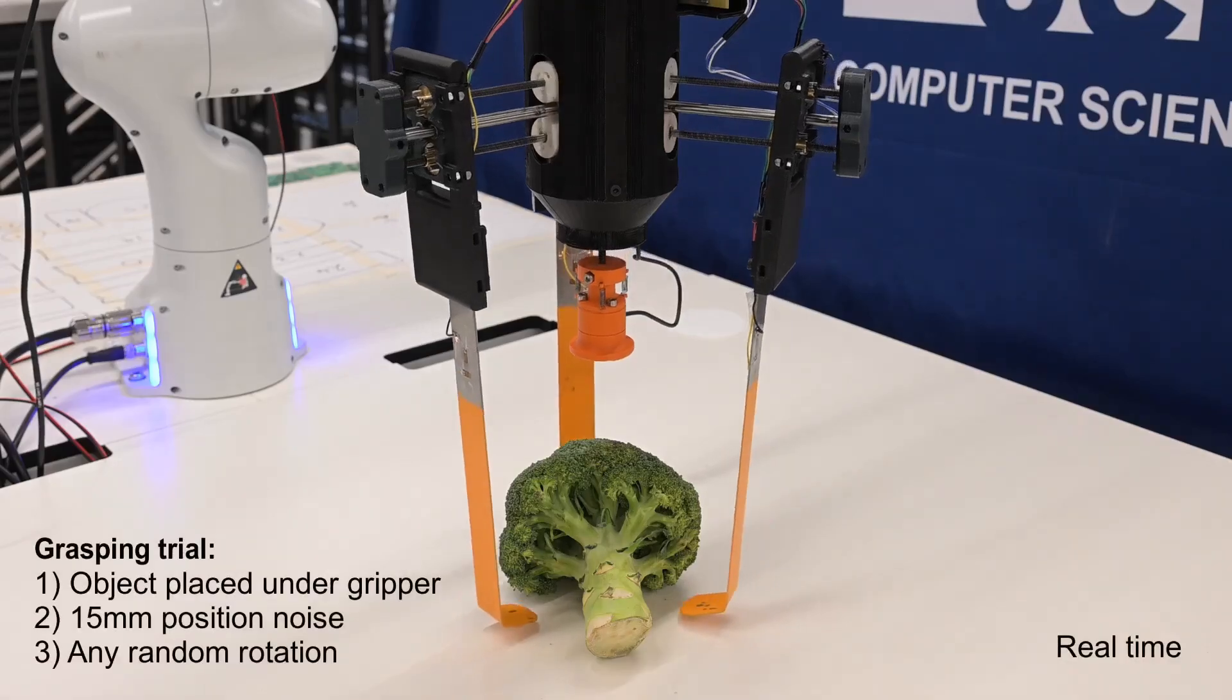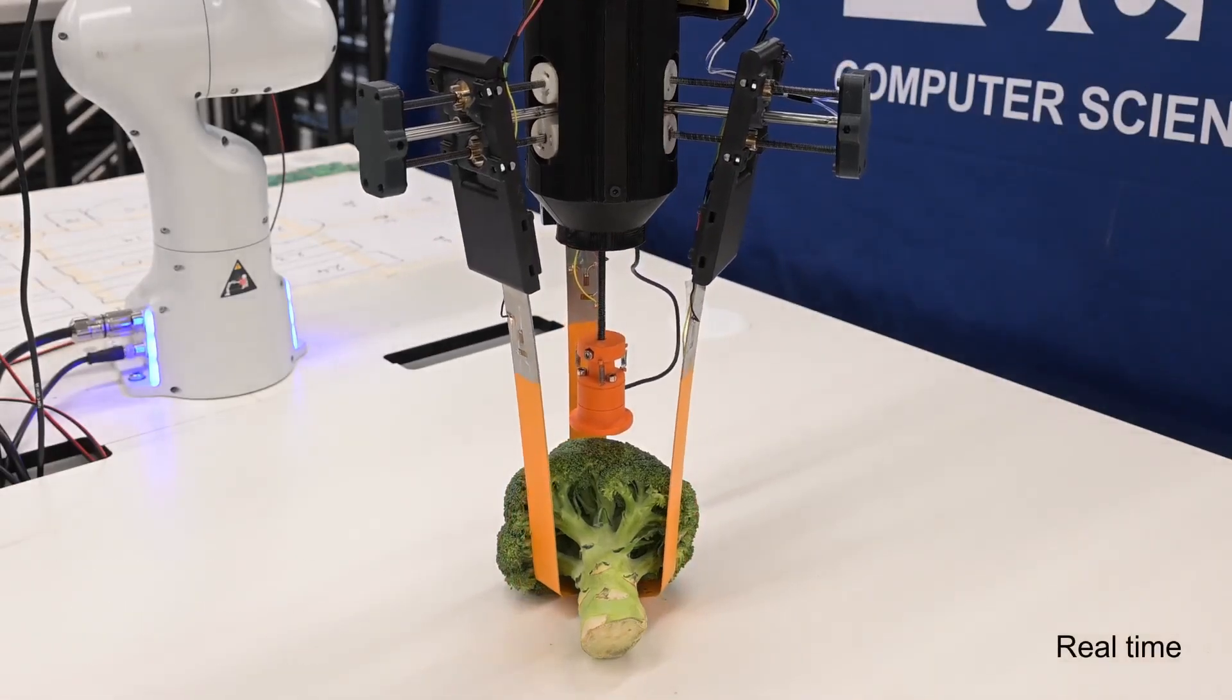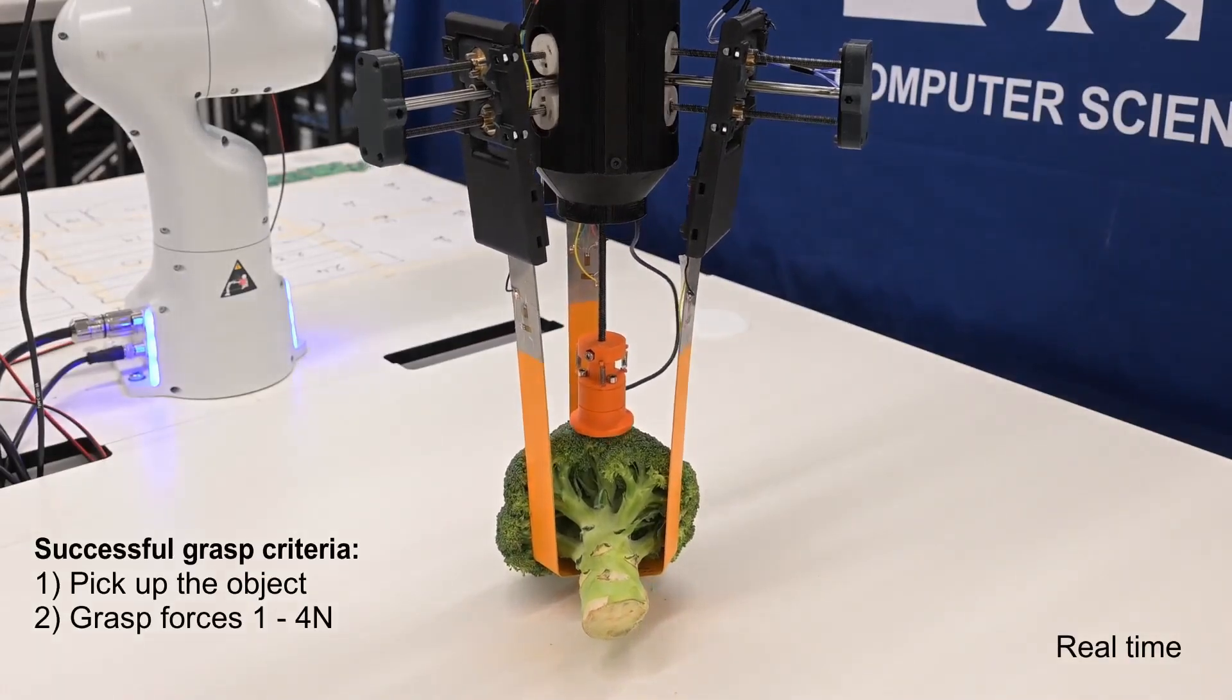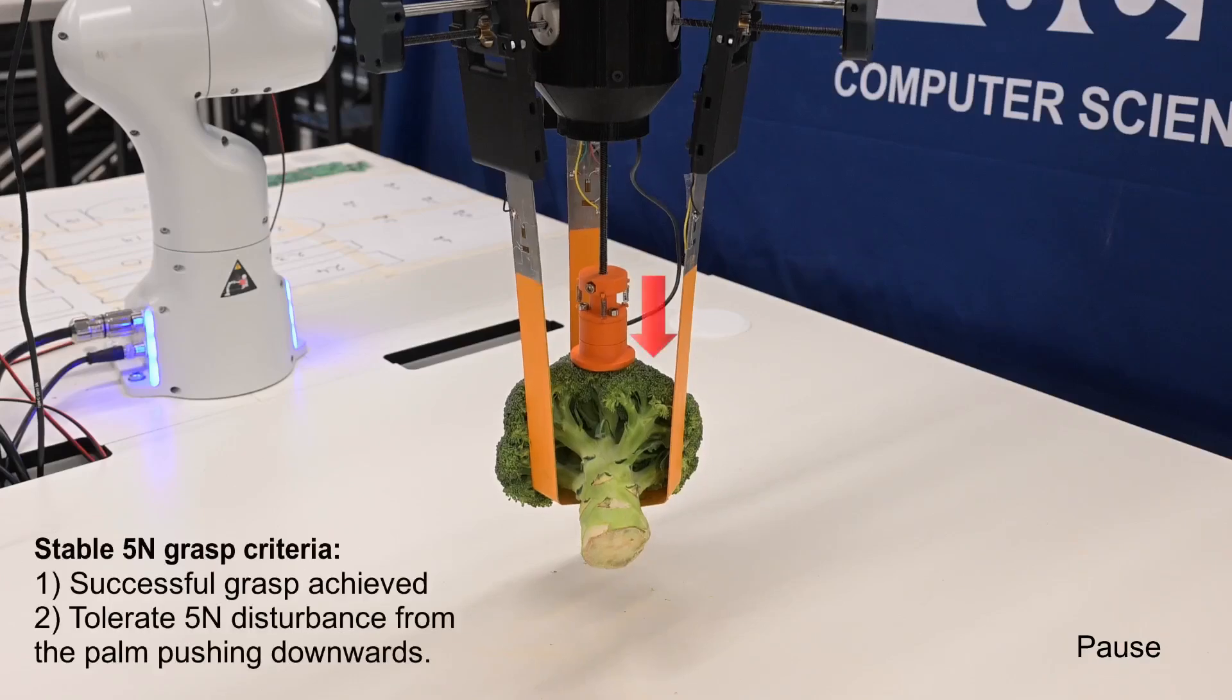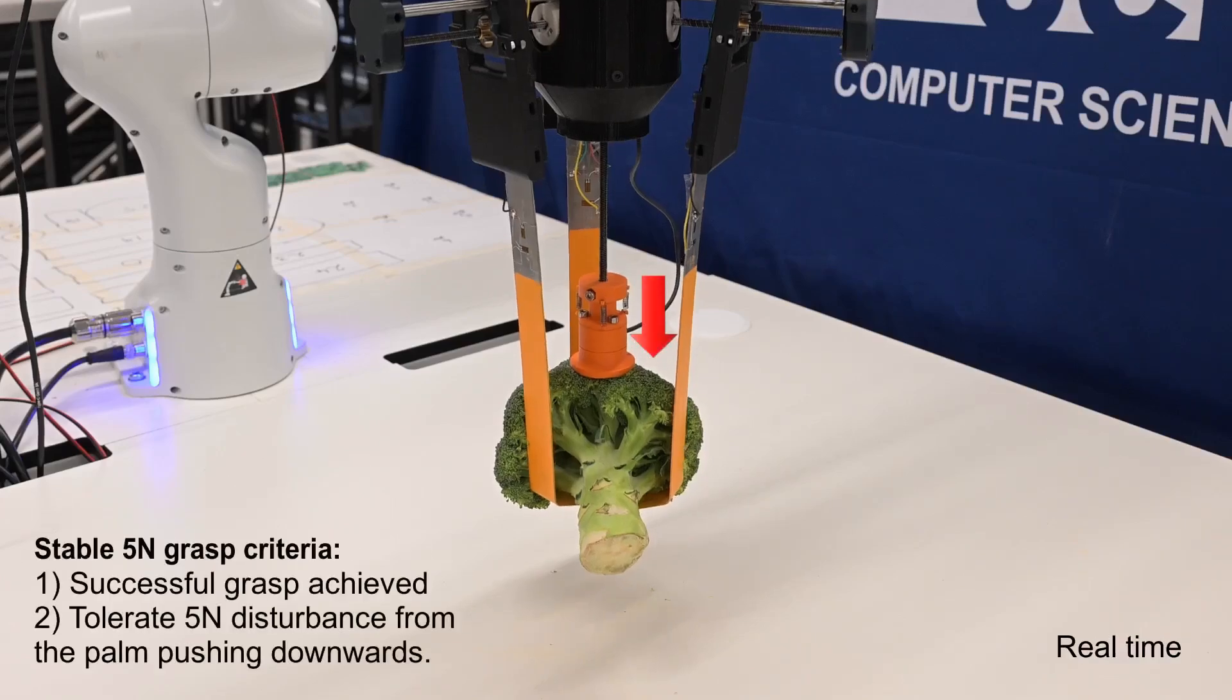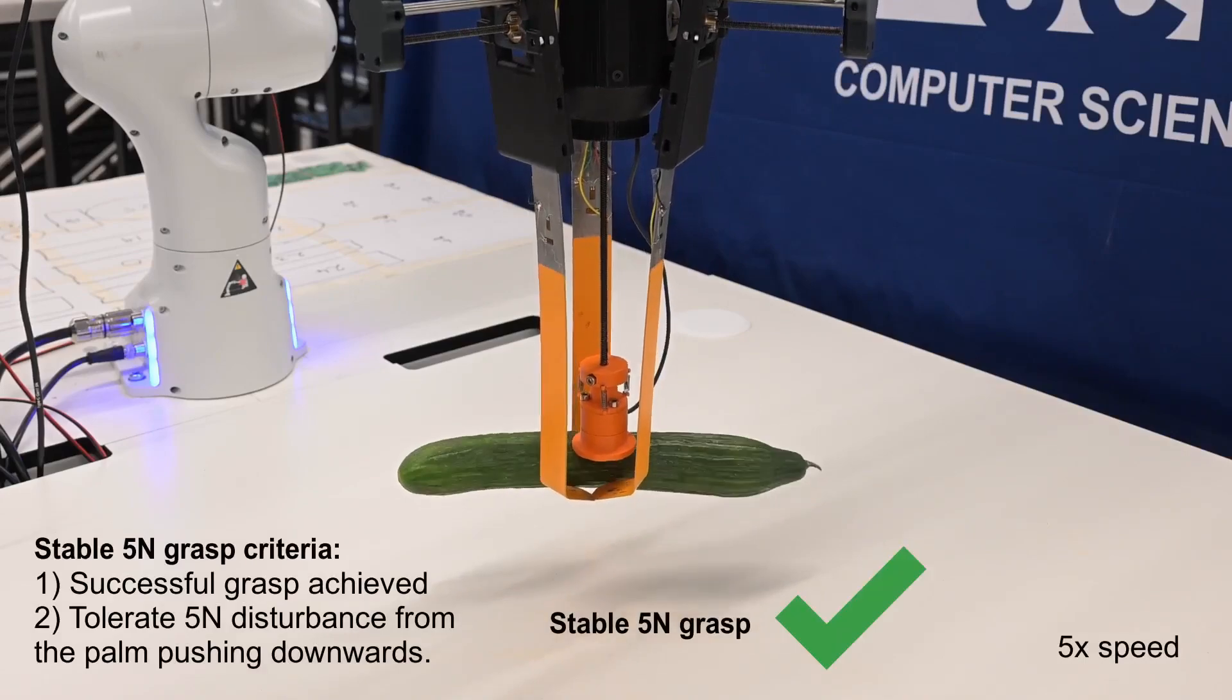Objects were placed randomly under the gripper for trials. Success meant picking up the object with limited grasp forces. A stable 5N grasp required tolerating the palm pushing downwards with 5N of force.